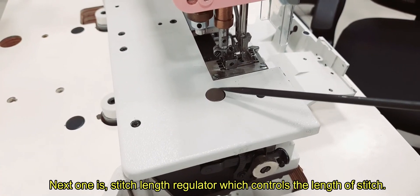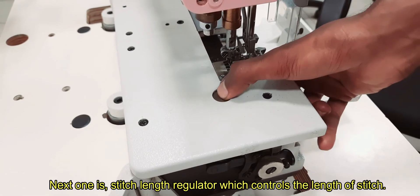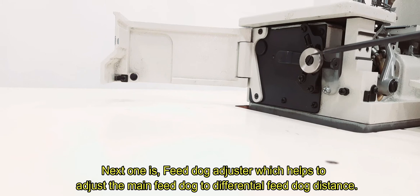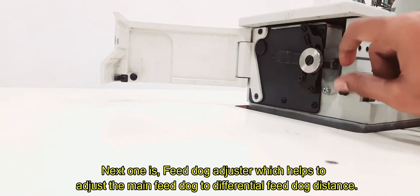Next one is stitch length regulator, which controls the length of stitch. Next one is feed dog adjuster, which helps to adjust the main feed dog to differential feed dog distance.